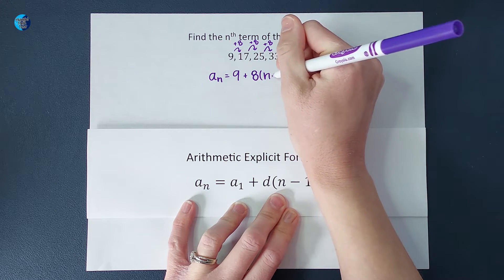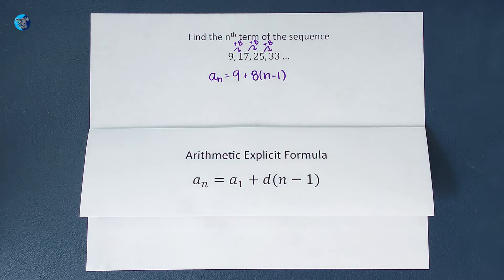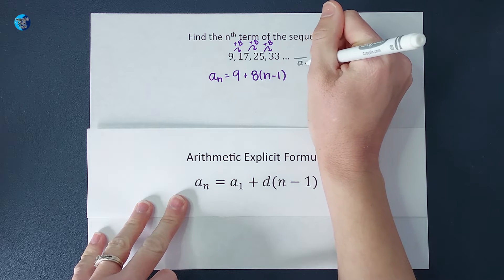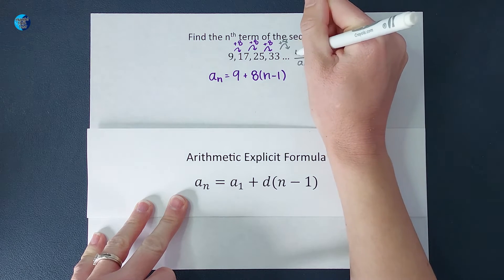Why do I add that on the back here? Well, I want you to think for a minute. If I was looking for the fifth term in this sequence, or a sub 5, what would I do? I would add 8 again, and I would end up with 41.